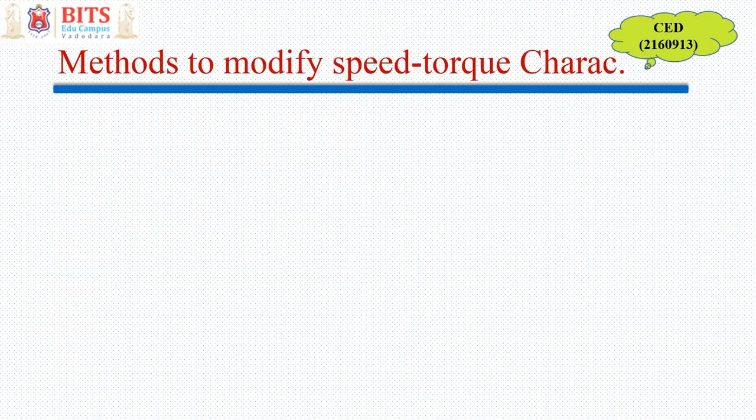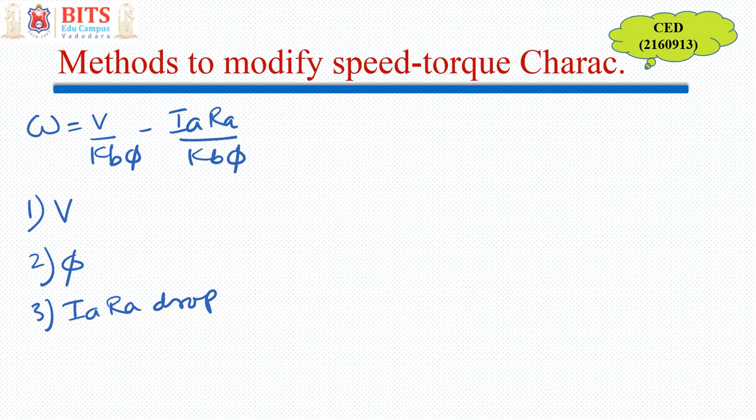Now how to modify. So for that we know the mathematics that the speed is depending on armature voltage, flux, and the IaRa drop. So from that we have three methods: armature voltage control,